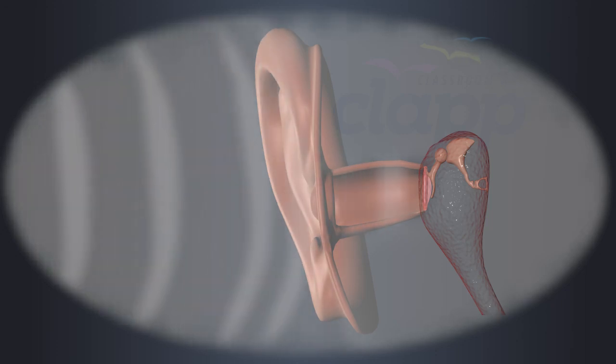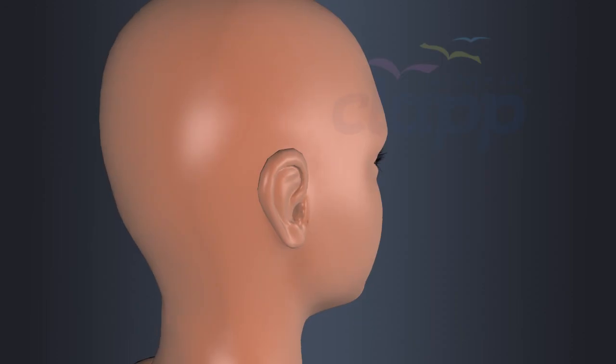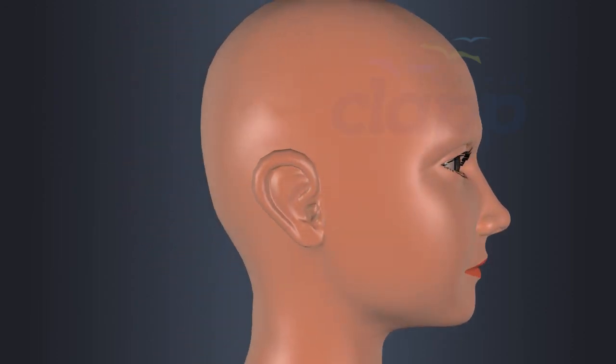It plays a crucial role in the initial stages of hearing by capturing and funneling sound waves towards the middle ear. The outer ear consists of three structures: